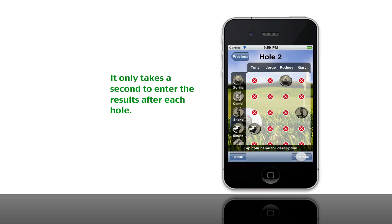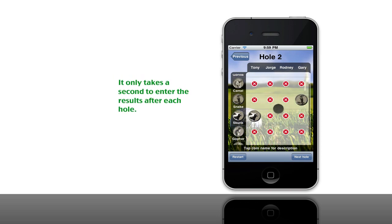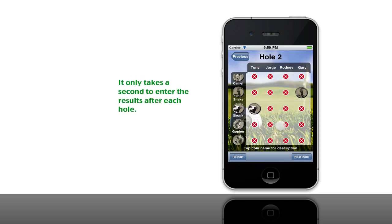Move to the next hole, and again at the end of the second hole you're just going to quickly record the results. George this time was the last one to hit it out of bounds. Rodney for the gopher and the goat.